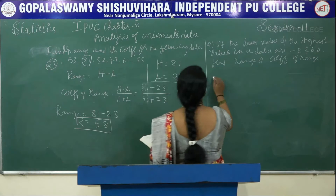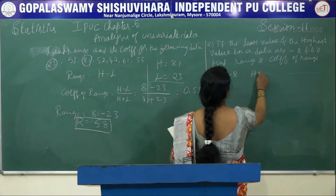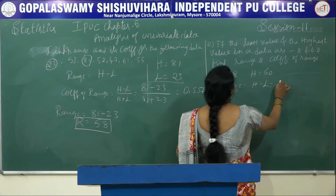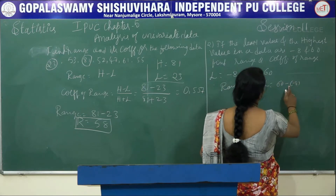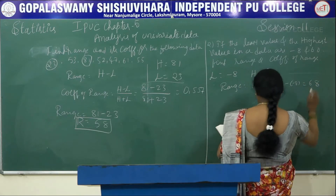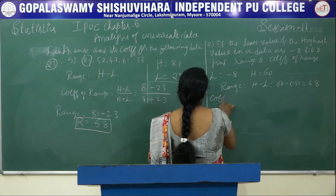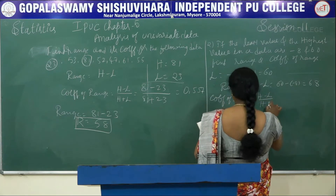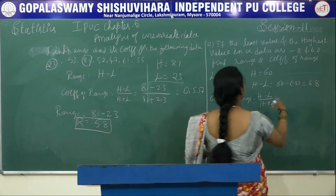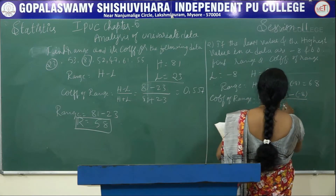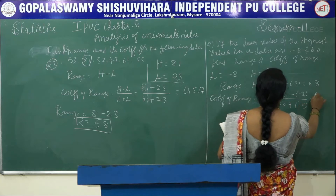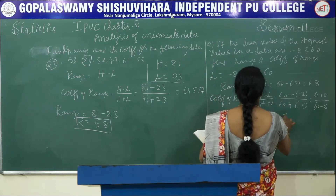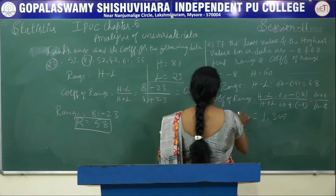Instead of giving the observations, they have given the highest and lowest values directly. L is equal to minus 8 and H is 60. To find range: H minus L is 60 minus of minus 8. Minus of minus 8 becomes plus 8, so range is 68. To find coefficient of range: 60 minus of minus 8 divided by 60 plus 8, which gives 1.307.